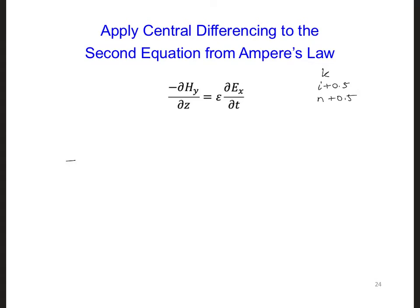So if we do this, we have a minus sign in front, and then we have Hy at n plus 0.5, located at i plus 0.5 and k plus 0.5. We're performing a partial derivative in the z direction, so this will be at the same time step, the same i location, where we're going to have minus 0.5 for k, divided by delta z.